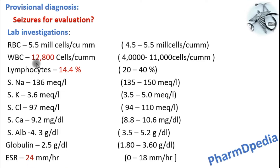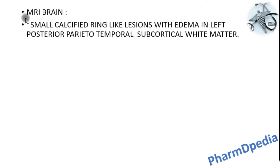CBP was investigated to find any infections or deficiencies; serum electrolytes to find any electrolyte abnormalities; and ESR to rule out inflammation. CBP revealed that WBC was slightly increased and lymphocytes decreased, indicating a parasitic infection. ESR was slightly elevated, indicating inflammation. MRI brain revealed small calcified ring-like lesions with edema in the left posterior parietotemporal subcortical white matter region.